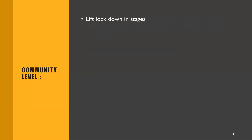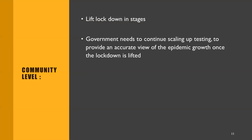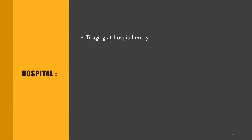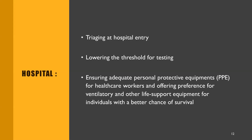At a community level, lockdown should be lifted in stages — not abruptly — and the government needs to continue scaling testing to provide an accurate view of epidemic growth once the lockdown is lifted, along with education on personal hygiene and increasing social distancing while discouraging large gatherings. At a hospital level, there should be triaging at the hospital entry, lowering the threshold for testing, ensuring adequate PPE for healthcare workers, and offering preference for ventilators and life-support equipment to individuals with a better chance of survival.